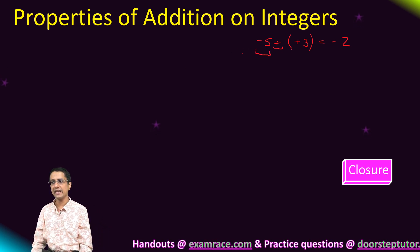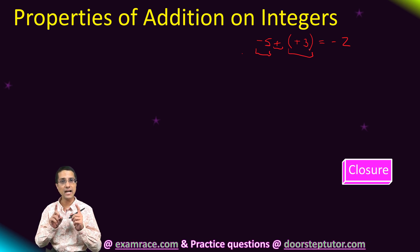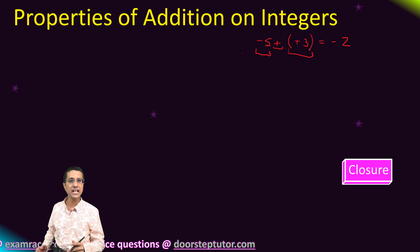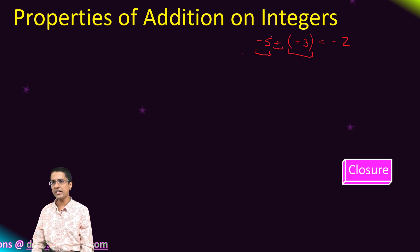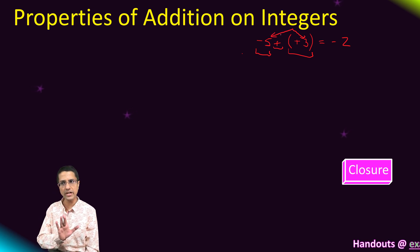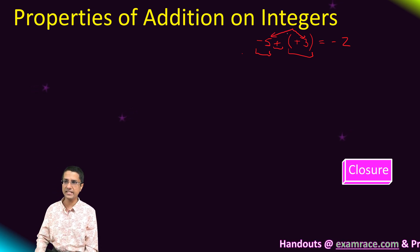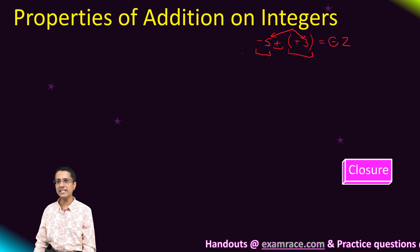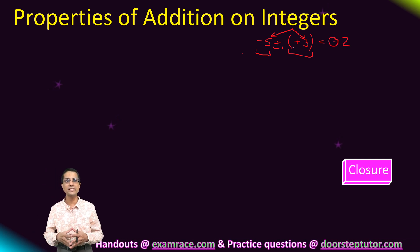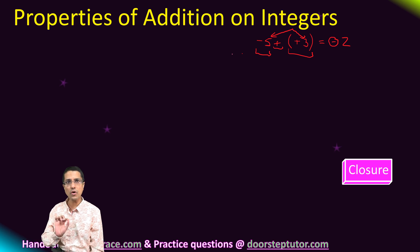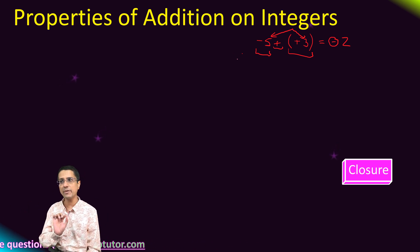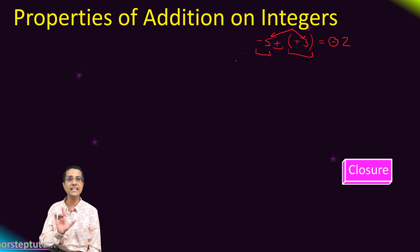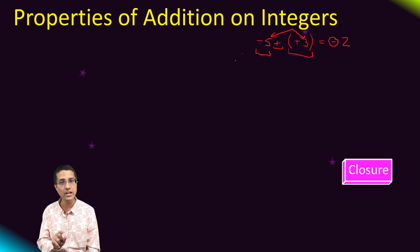That is the closure property — similar to the closure property of whole numbers. It says that no matter which two integers I take, if I add them together the answer would necessarily be an integer. As we saw in the case of addition of integers, all we are doing is adding and subtracting magnitudes and changing the sign based on the operands, which would always result in an integer. There is no operation involved that could take us outside the realm of integers.